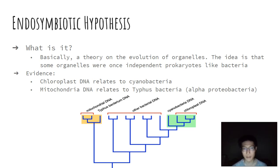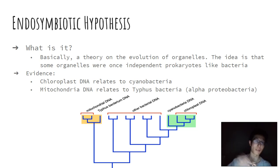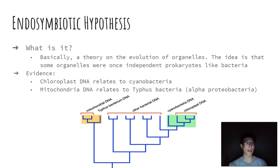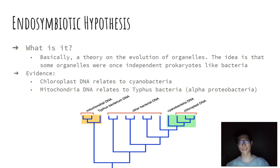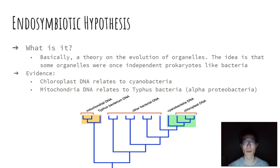It's very interesting, because chloroplasts have their own sequence of DNA that's separate from the DNA found in our nucleus, and similarly with mitochondria, they also have DNA that's different than the DNA within our nucleus.